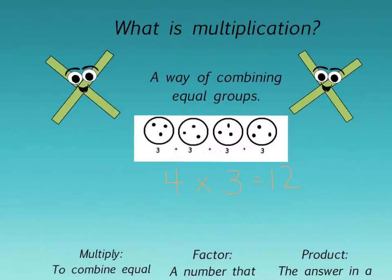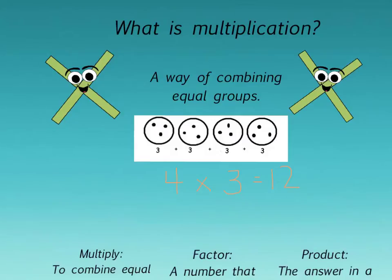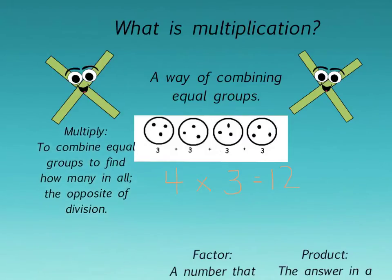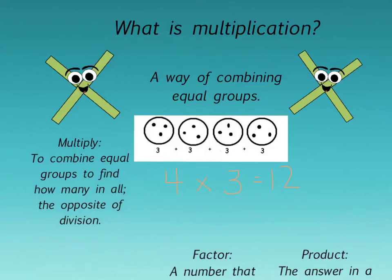Let's get started by talking about multiplication. What is multiplication? Well, simply put, multiplication is a way of combining equal groups. The definition of multiply is to combine equal groups to find how many in all, and it is the opposite of division.